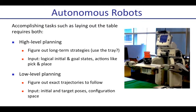Take for example the task of laying out a table. We need high-level planning to figure out long-term strategies — for example, should we use the tray, and if we use the tray, in what order should we stack things — as well as low-level planning where we want to find out exactly the motion planning trajectories that should be followed to do each of these simple actions.